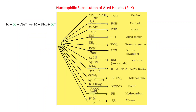Nucleophilic substitution reactions of alkyl halides (RX): with NaOH (aqueous), the nucleophile is OH⁻ which replaces Cl to give ROH (alcohol). With water, the oxygen lone pair acts as nucleophile to give ROH (alcohol). With NaOR (sodium alkoxide), the alkoxide ion is nucleophile, giving ROR' (ether), where R and R' may be the same or different alkyl groups.